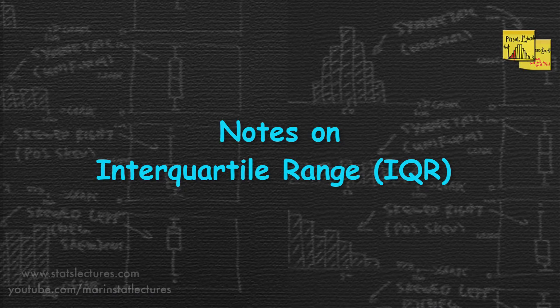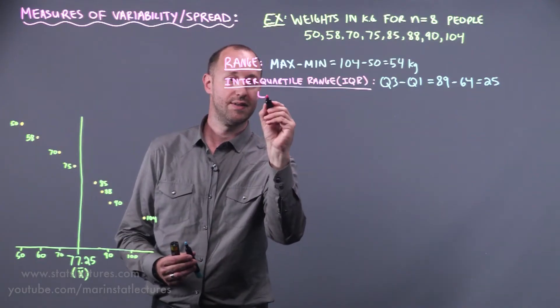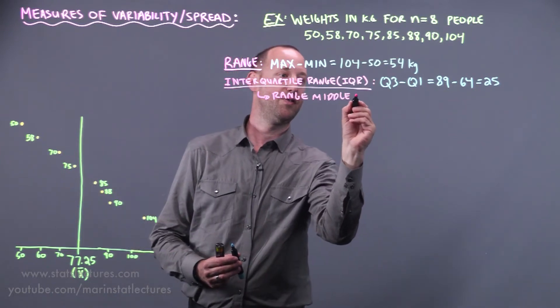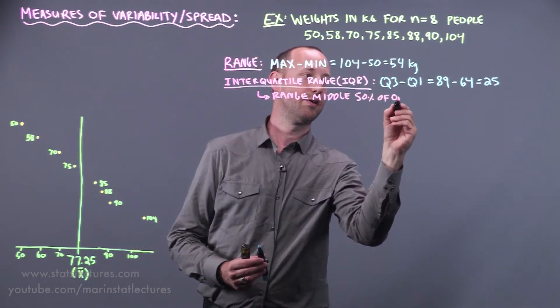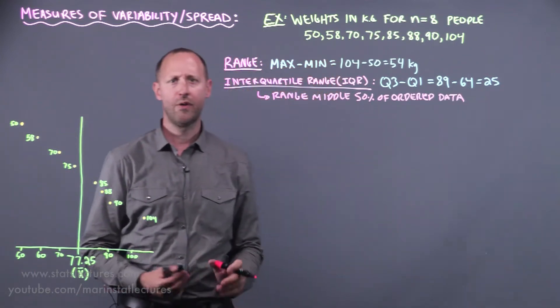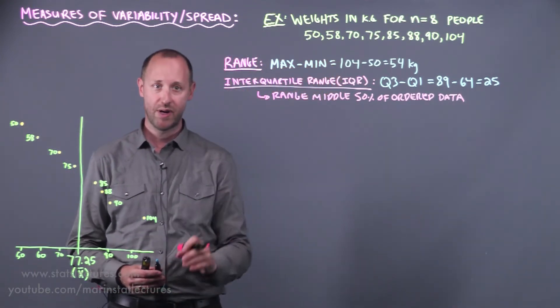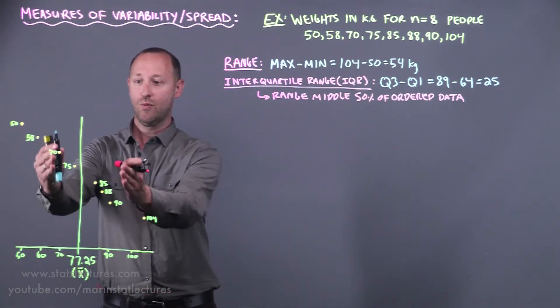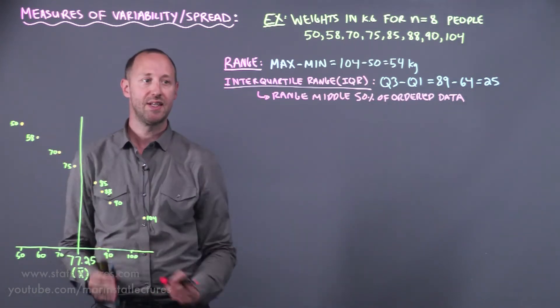A few notes on the interquartile range. First is that it's giving us the range of the middle 50 percent of the ordered data. You can think of it as being a trimmed range. We cut off the bottom quarter, cut off the top quarter, and look at the range of the 50 percent of data sitting in the middle.